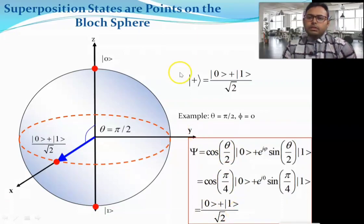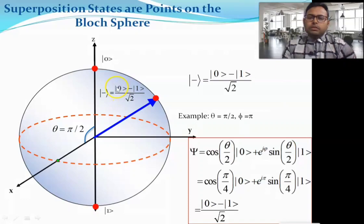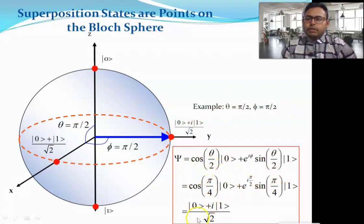This is the |+⟩ state. For the |−⟩ state, set θ = π/2 and φ = π (180°), giving |ψ⟩ = (|0⟩ − |1⟩)/√2. Now if we set θ = π/2 and φ = π/2, substituting the values gives |ψ⟩ = (|0⟩ + i|1⟩)/√2, which corresponds to a specific phase angle on the Bloch sphere.